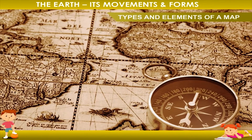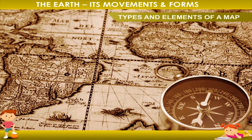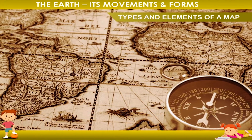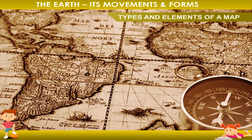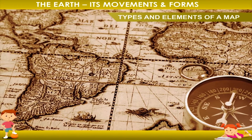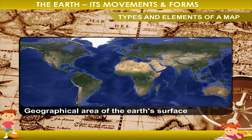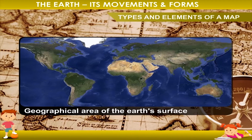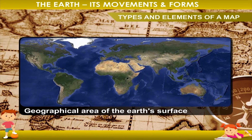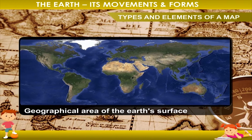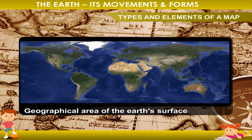Types and Elements of a Map. A map can be defined as a two-dimensional representation of the whole or part of the geographical area of the Earth's surface. There are various types of maps to show different features of the Earth.